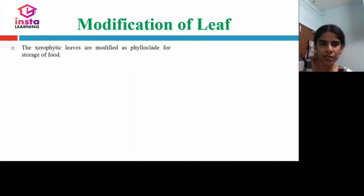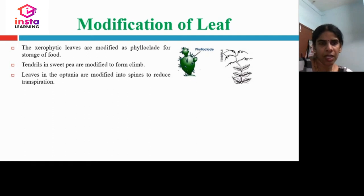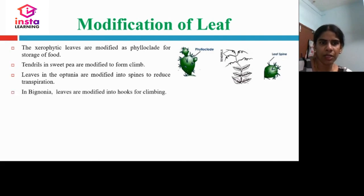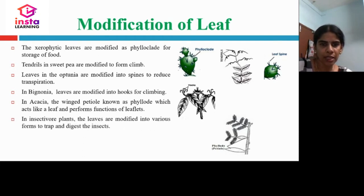Let us now learn about modification of leaves. Xerophytic leaves, found in deserts, are modified as phylloclades for storage of food. Tendrils in sweet pea are modified to form climbing structures. Leaves in Agave are modified into spines to reduce transpiration. In Bignonia, leaves are modified into hooks for climbing. In Acacia, the winged petiole known as a phyllode acts like a leaf. In insectivorous plants, leaves are modified to trap and digest insects.